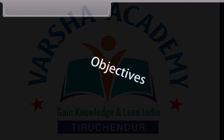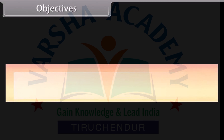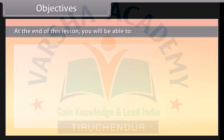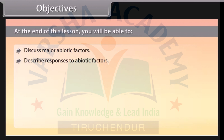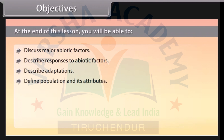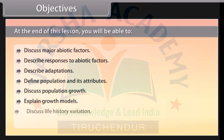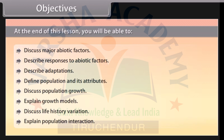Objectives: At the end of this lesson you will be able to discuss major abiotic factors, describe responses to abiotic factors, describe adaptations, define population and its attributes, discuss population growth, explain growth models, discuss life history variation, and explain population interaction.